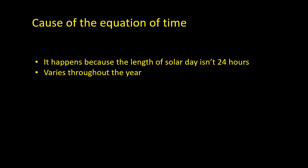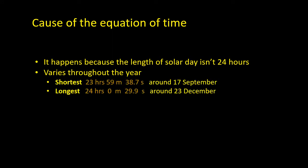The solar day is at its shortest in mid-September and its longest just before Christmas Day. If we look at this graph, the y-axis shows the difference in seconds between the length of the solar day and 24 hours — so for example, 10 means 24 hours 10 seconds, 20 means 24 hours 20 seconds, and minus 10 means 23 hours 59 minutes 50 seconds.